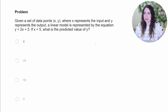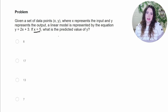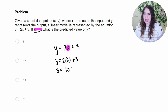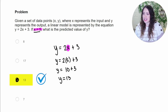This question says: given a set of data points x, y, where x represents the input and y represents the output, and a linear model is represented by the equation y = 2x + 3, if x equals 5, what is the predicted value of y? We just need to take our equation y = 2x + 3 and replace x with 5. That looks like y = 2 times 5 plus 3. We multiply first: 2 times 5 is 10, plus 3. So y equals 13 is our expected output — 13 is our correct answer.